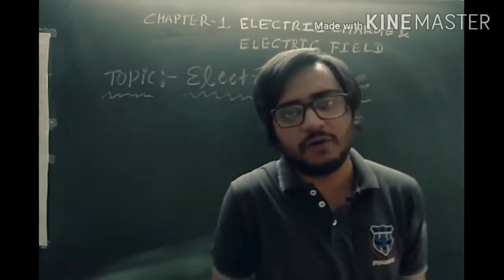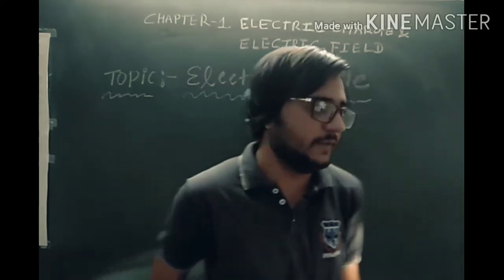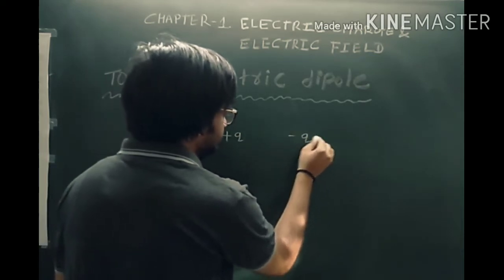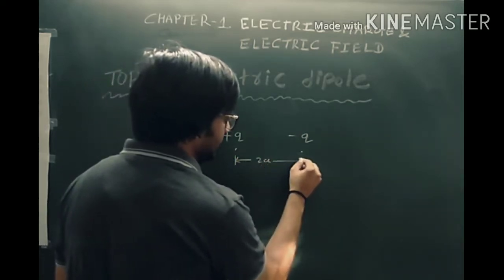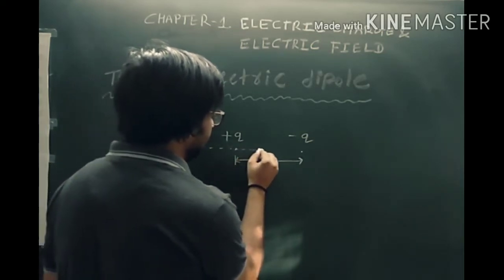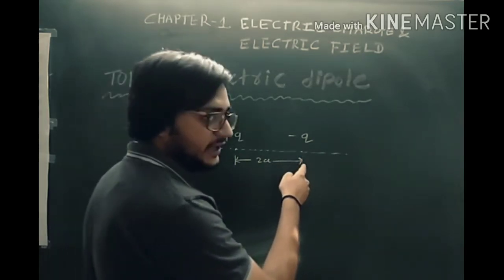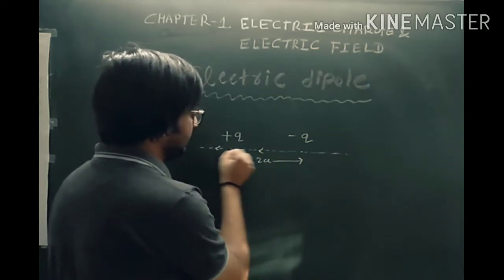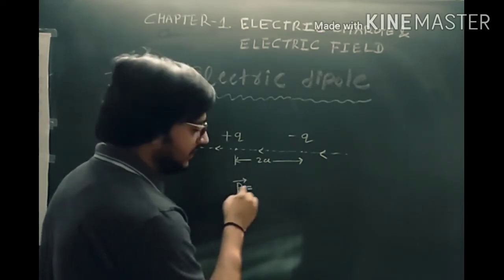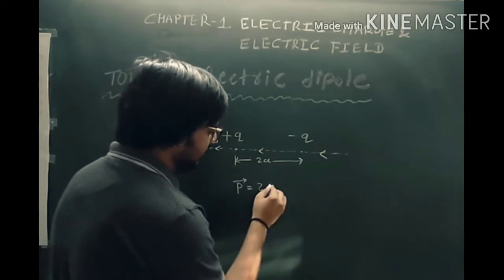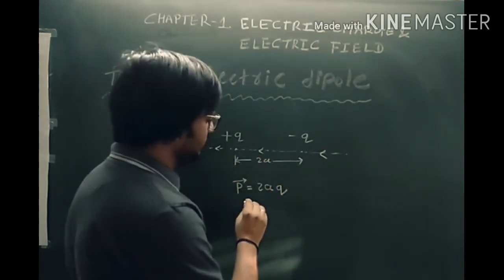Earlier I already talked about what is an electric dipole. An electric dipole is a pair of two charges separated by some distance, say 2A. The line joining between these two charges defines the direction of the dipole. By convention, we take the direction from minus Q charge to plus Q charge as our direction of the dipole.